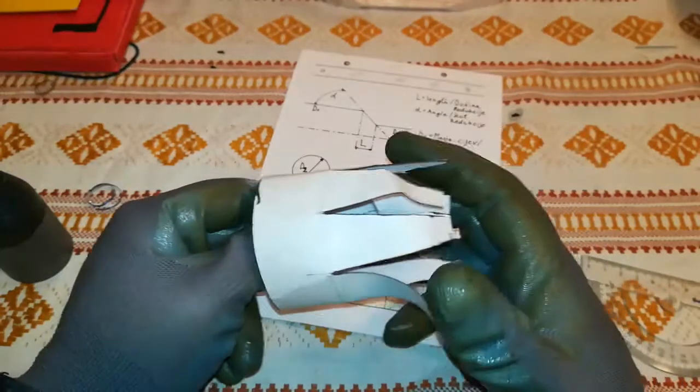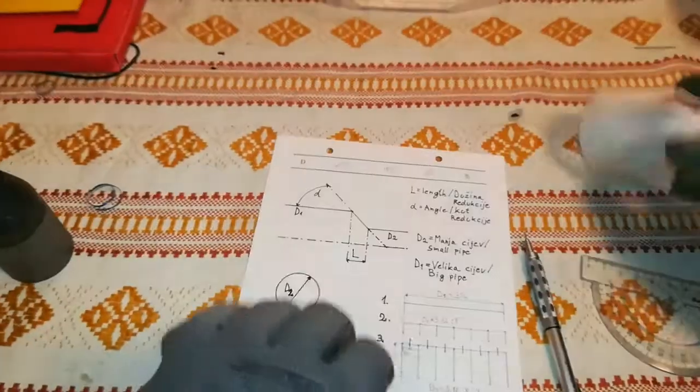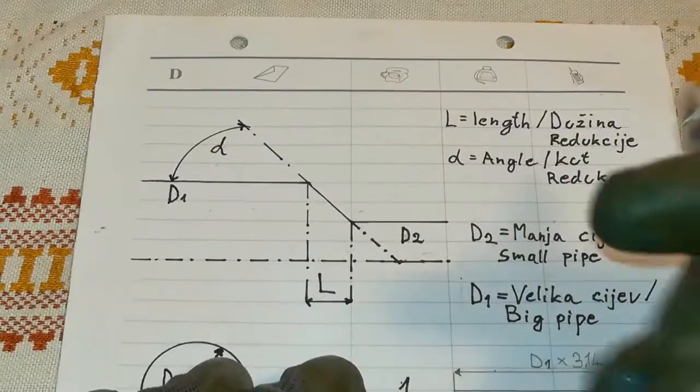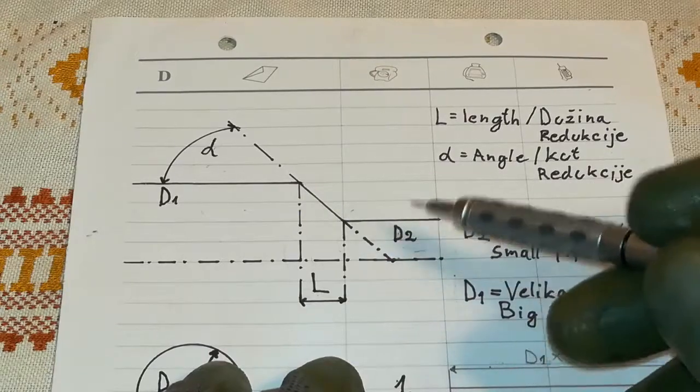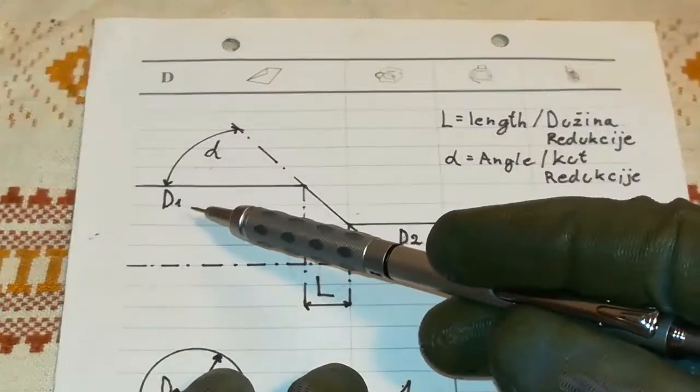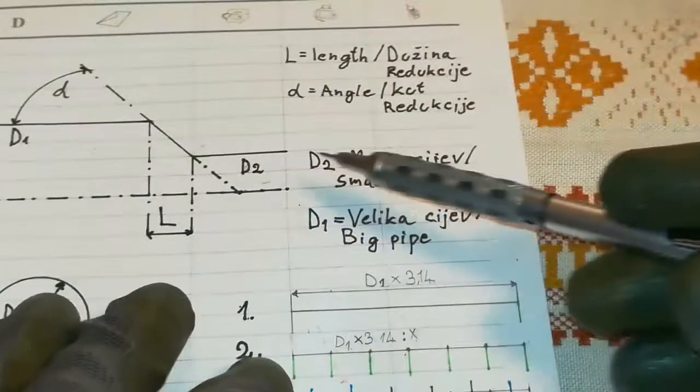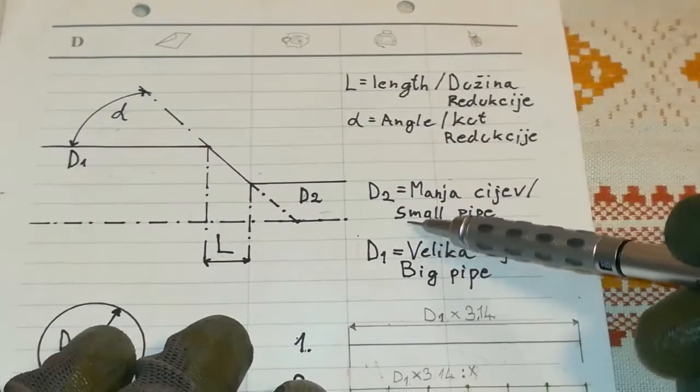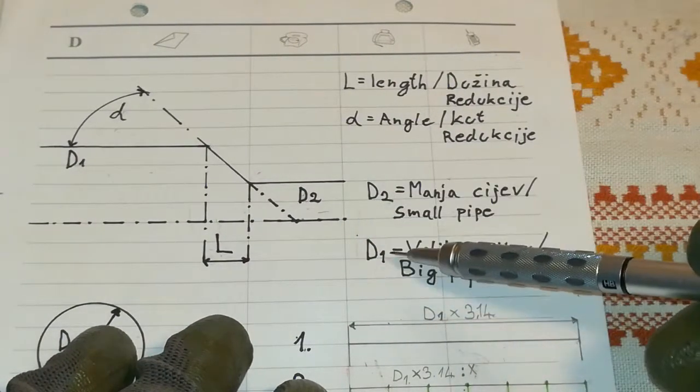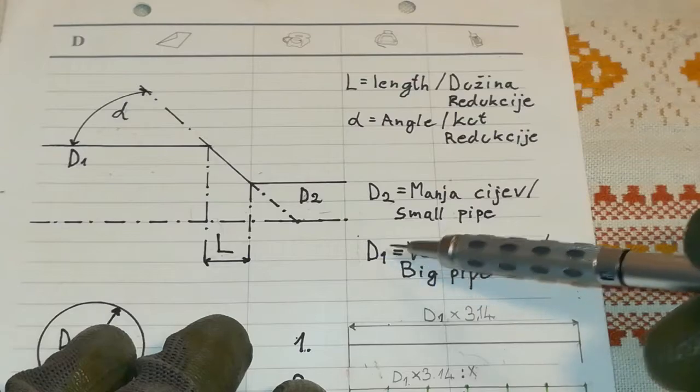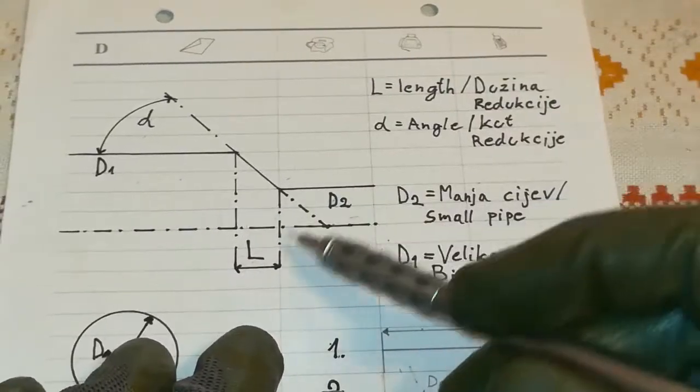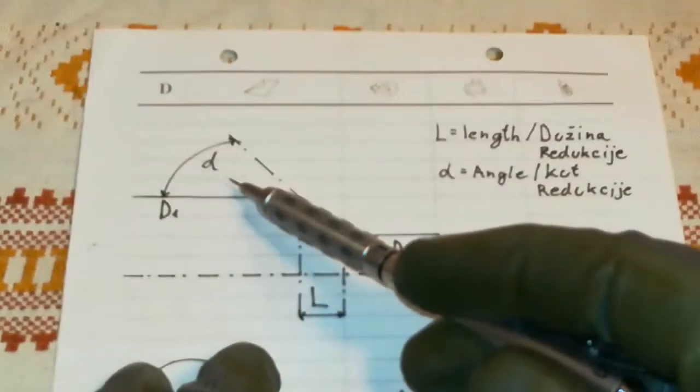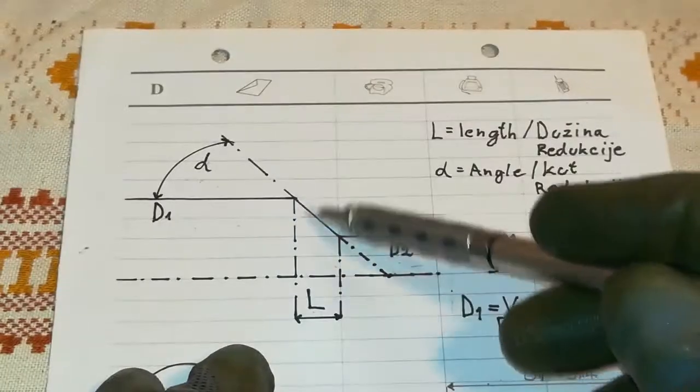Let's see how to make a template like this. To make it, you're going to need to know four values, three for the calculator that I'm using. D1 is the diameter of the big pipe. D2 is smaller pipe outside diameter as well. We're dealing with outside diameters. L is the length of the reduction and alpha angle is the angle of reduction.